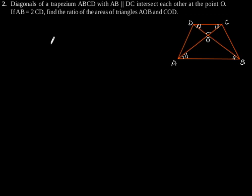Exercise 6.4 Question number 2. Diagonals of a trapezium ABCD with AB parallel to DC intersect each other at the point O. If AB is equal to 2CD, find the ratio of the areas of the triangles AOB and COD.